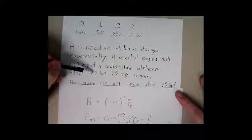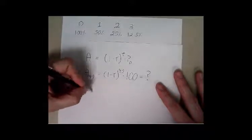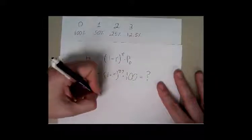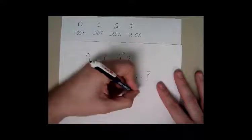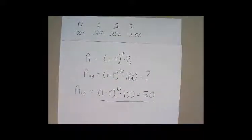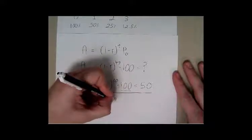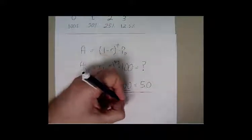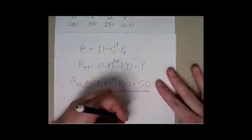Let's think about half-life. We know that after 30 hours, 50 milligrams remain. So we know that if we look at A sub 30 — if we plug in 30 hours — we would have 50 milligrams remaining. Now we have an equation and we can solve for R. The first thing we're going to do is divide both sides by 100, so we'd have 1 minus R raised to the 30 equals 0.5, which makes sense since we're talking about half-life.